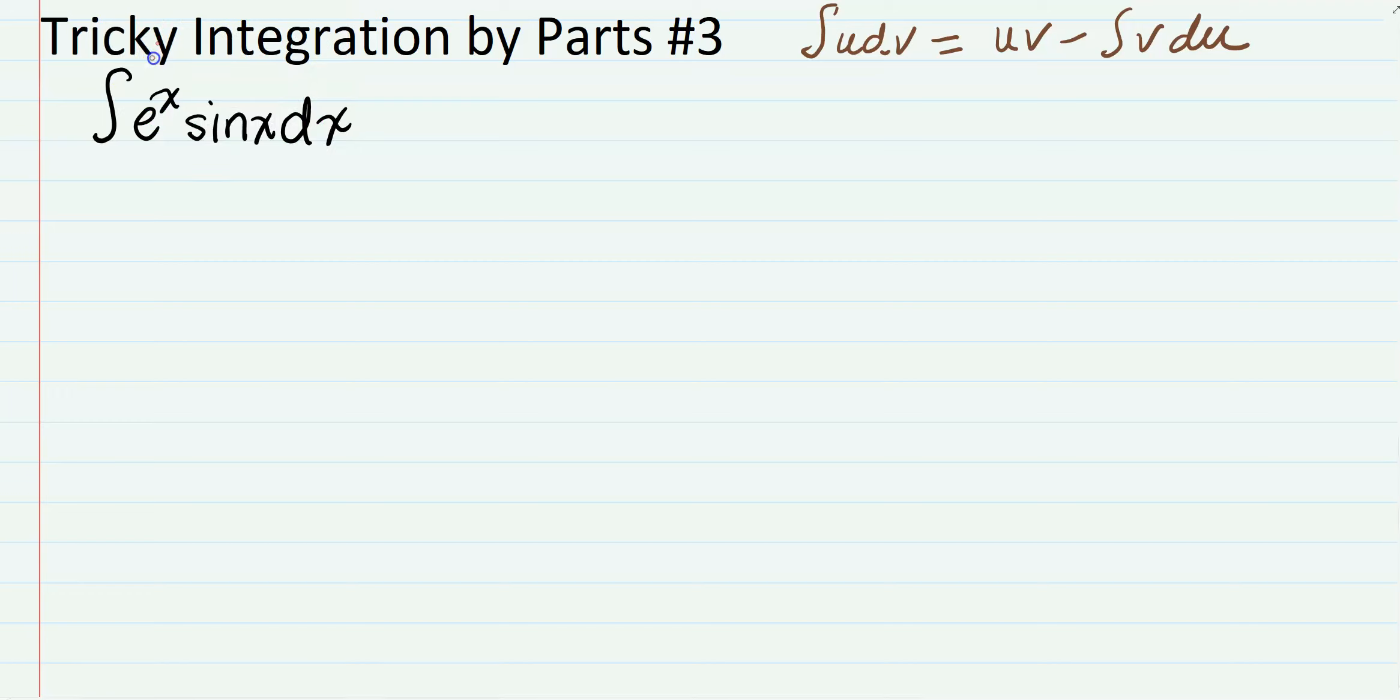Here we are going to let u be sin(x) and then let dv be e to the x dx. I just feel like it's easier to take the integral of e to the x rather than sin(x), even though I think in this case you probably could do the other way around.